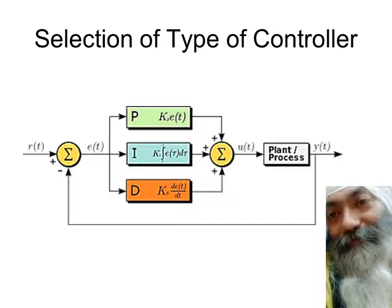In this session we will be summing up what we have learned so far — it's a kind of consolidation or revision process for the selection of type of controller. When we say selection of type of controller, it's a very broad term. A controller can be a feed-forward controller, an inferential type of controller, and here we are specifically talking about the selection of feedback controller.